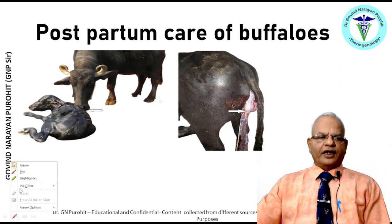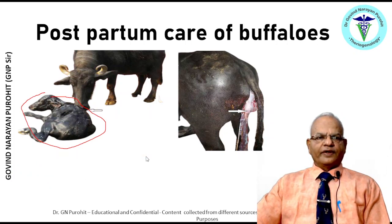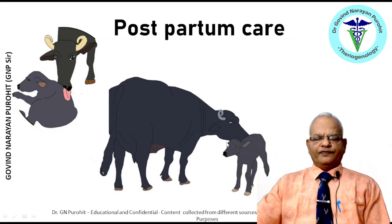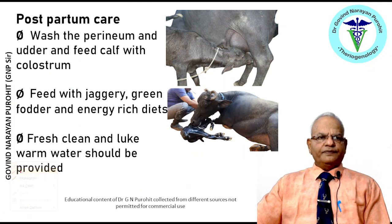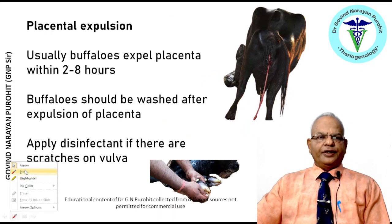After parturition, allow the buffalo to lick her calf and lick the navel, which stimulates circulation so the calf stands up. The placenta of the buffalo may hang out of the vulvar lips. The perineum and udder should be washed, and feed the calf with colostrum as early as possible. Feed the buffalo with jaggery, green fodder, and energy-rich diets; provide fresh, clean, lukewarm water. Buffaloes usually expel the placenta within two to eight hours; the area should be washed after placental expulsion.